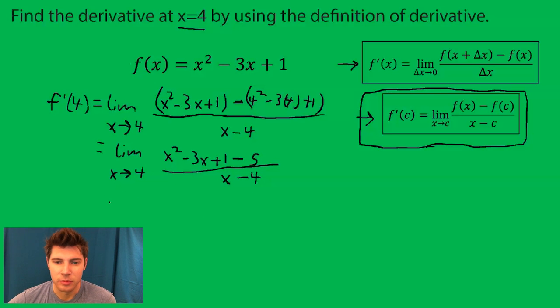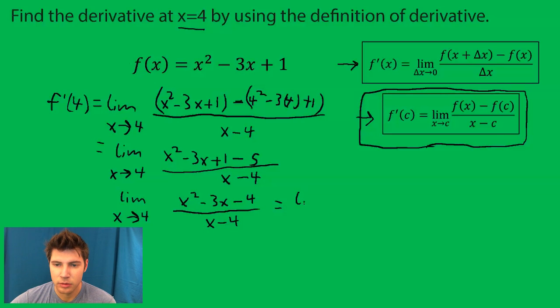Next step, combine like terms at the top. And now, next thing we want to do is factor the top. This factors into x minus four and x plus one.